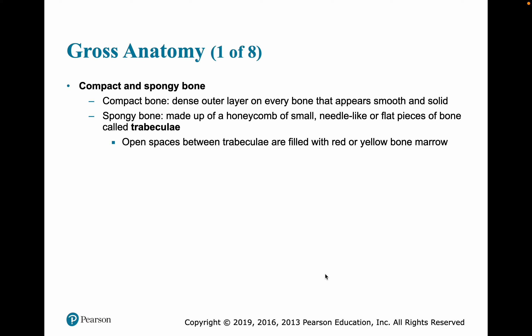Spongy bone, on the other hand, has a more honeycomb shape. There are small needle-like structures or flat pieces of bone called trabeculi. The open spaces between those trabeculi are going to be filled with marrow — either red marrow if it is making blood, or yellow marrow if it is storing fat.